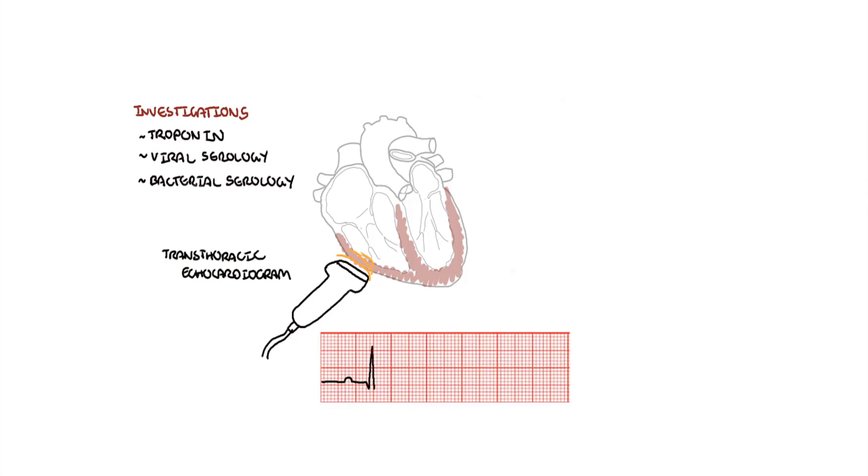An electrocardiogram may reveal conduction abnormalities. As mentioned in Giant Cell Myocarditis, it can cause atrioventricular blocks. Definitive diagnosis of myocarditis may require cardiac magnetic resonance imaging, MRI, or endomyocardial biopsy.